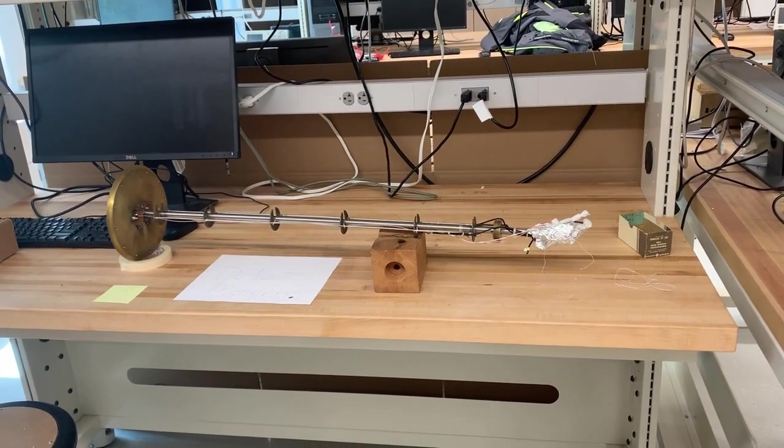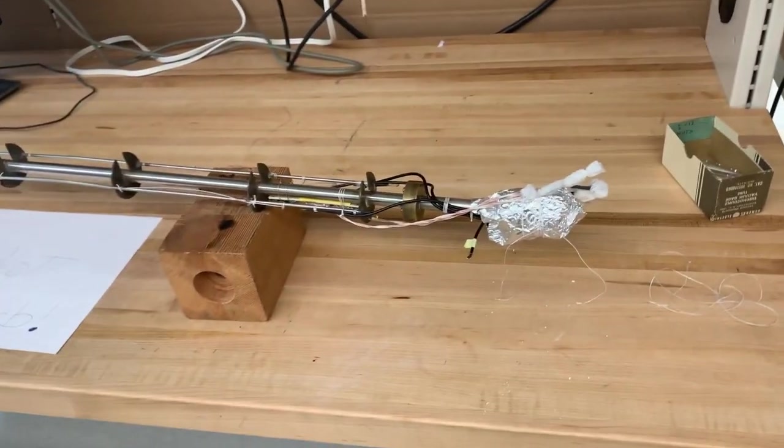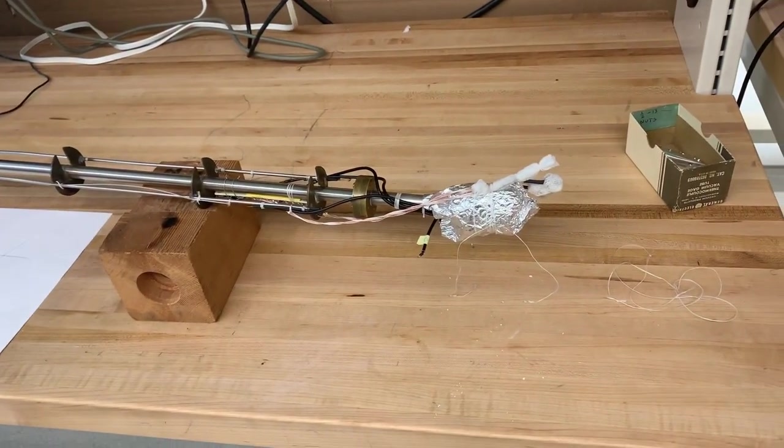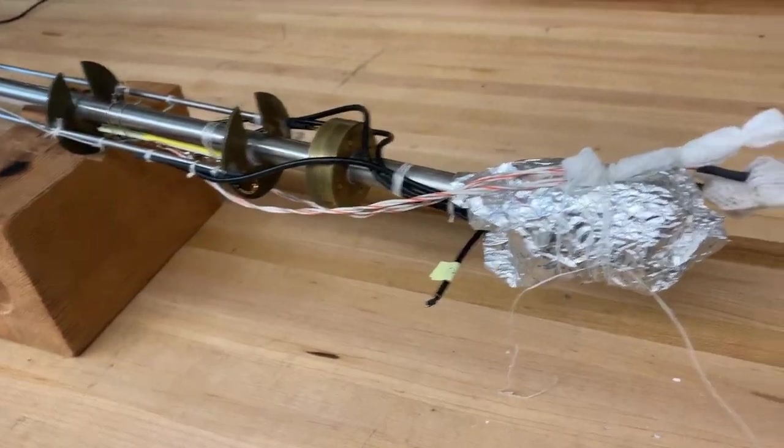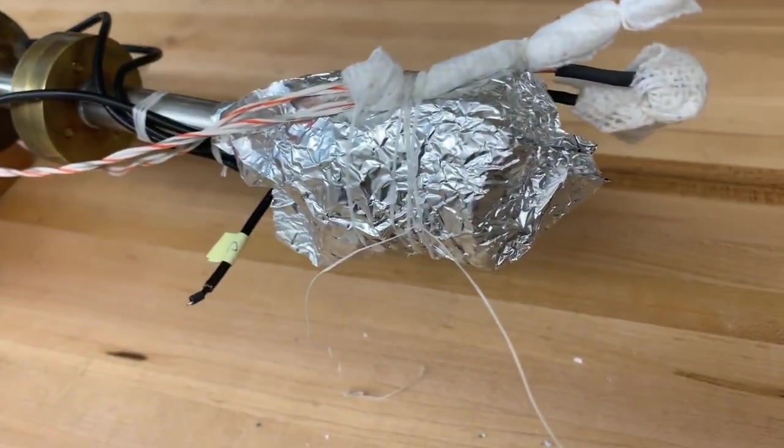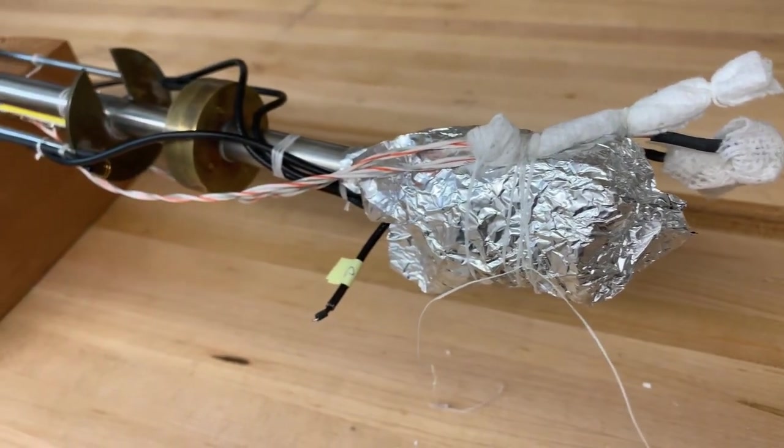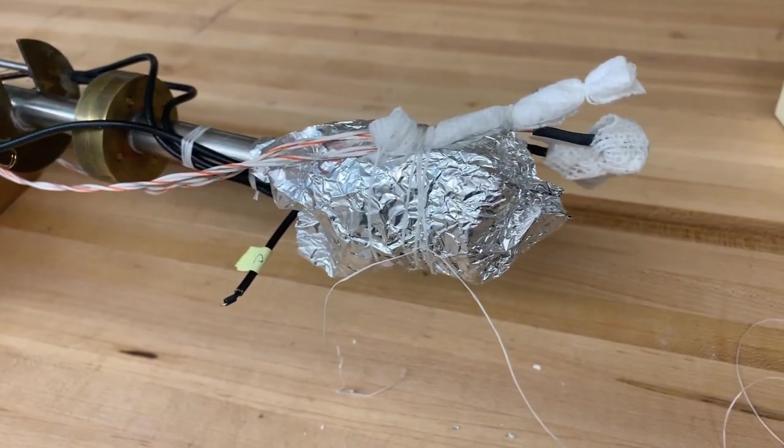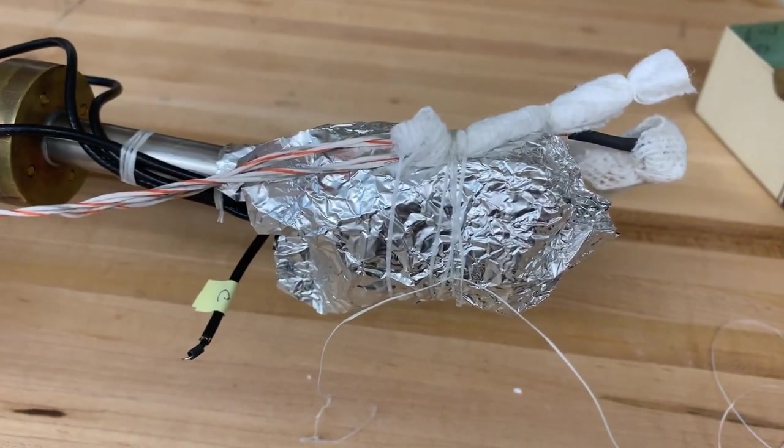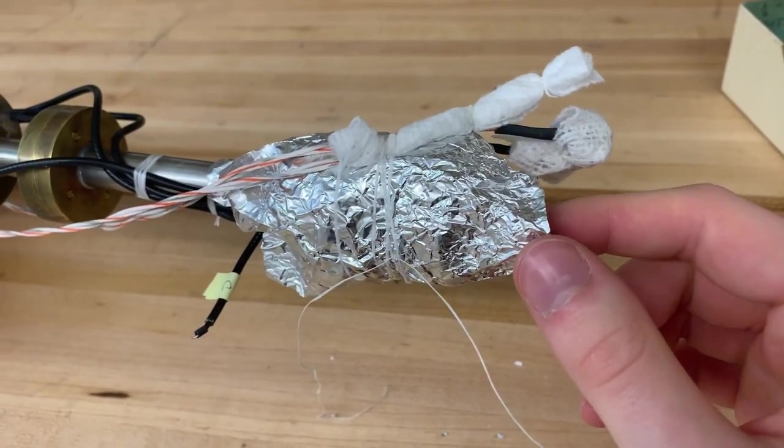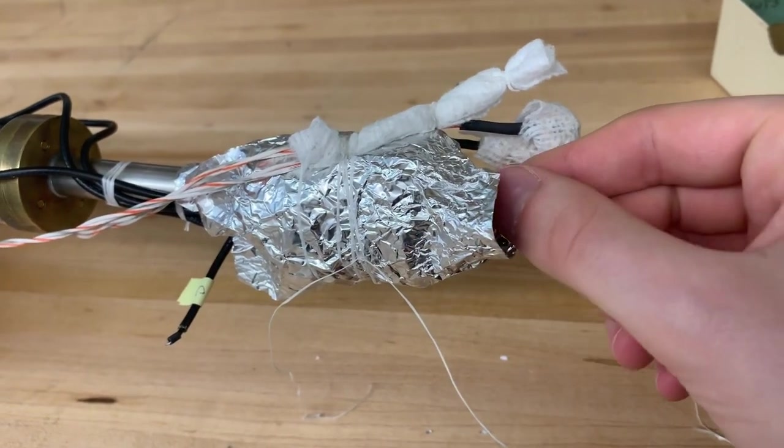What you see there is the cryostat that we'll be using. Now what we're doing to actually measure the speed of sound is we're using a resonator. The resonator is already covered up in that aluminum foil. The reason why we can use a resonator to get the speed of sound is because the location of the resonant frequencies doesn't just depend on the shape of the cavity, it also depends on the speed of sound of the material the waves are in.